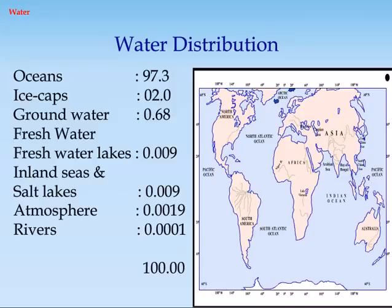Water distribution: Ocean 97.3%, Ice caps 2.0%, Ground water 0.68%, Fresh water and fresh water lakes 0.009%, Inland seas and salt lakes 0.009%, Atmosphere 0.0019%, Rivers 0.0001%. Total is 100.00%.